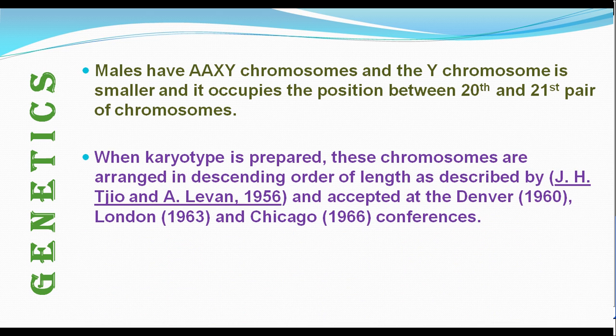When the karyotype is prepared, these chromosomes are arranged in descending order of length, as described by J.S. Jio and A. Livhan in 1956. This arrangement was accepted at the Denver Conference, London Conference, and Chicago Conference, and therefore it is a standard karyotype.